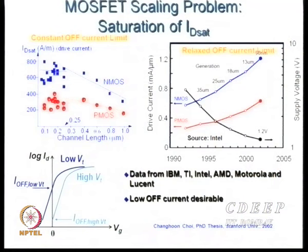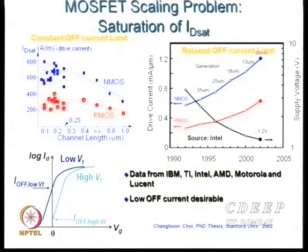In MOS transistor IV characteristics, the off-current below threshold was believed to be very small. But at small Vt, the off-current is very high. Scaling forces reduction of Vdd and Vt, but reducing Vt increases off-state leakage power — creating a conflict between wanting low power and low off-state current.